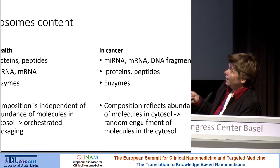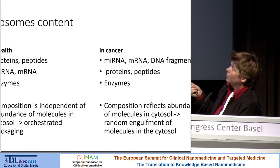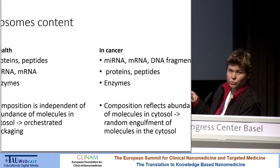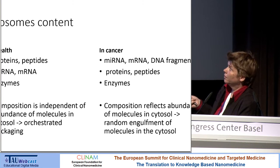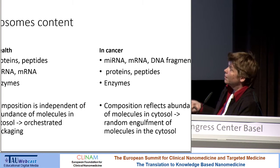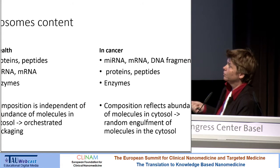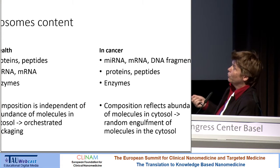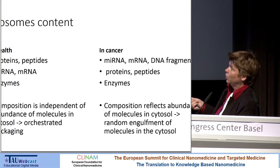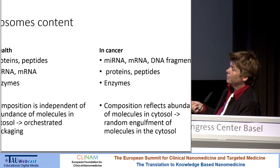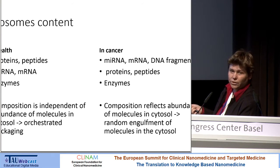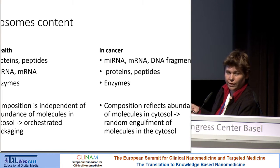In cancer, there is also some microRNA, mRNA, but there is also some DNA, which was recently found to be in exosome preparations, as well as proteins, peptides, and enzymes. In that case, it was found that the composition reflects the abundance of the molecules in the cytosol, and this usually indicates that there is a random engulfment of the cells and no organized packing.